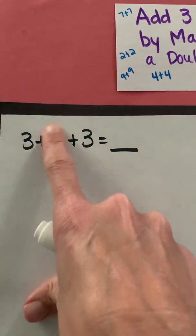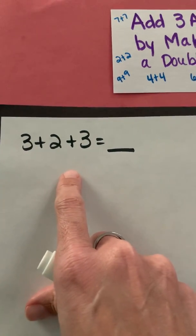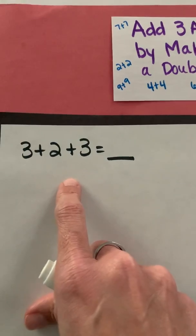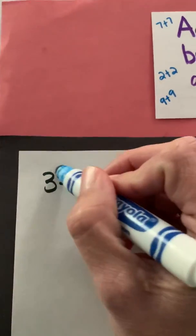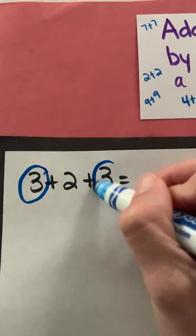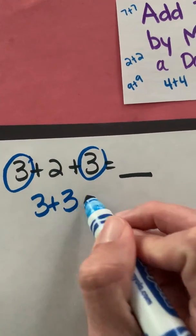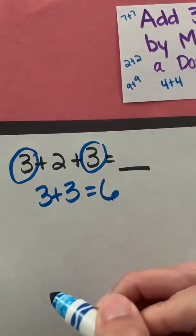So I'm looking here and I'm trying to think is there a way two numbers I can join together that will give me my doubles? And I can see that 3 plus 3 is a double. So I want to solve 3 plus 3 first, which gives me 6.